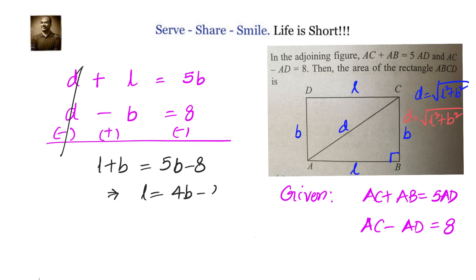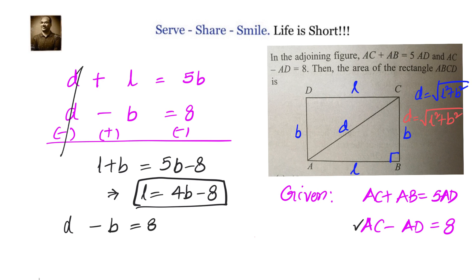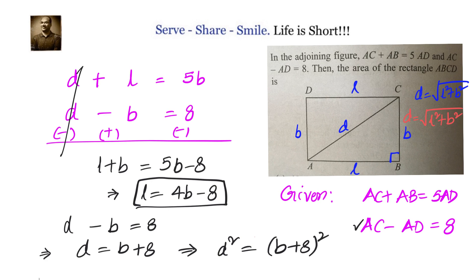We can take one of the given equations and solve for B and L. The area of the rectangle is L times B once we know those values. Taking the second equation, D minus B equals 8, so D equals B plus 8. Squaring both sides: D squared equals (B plus 8) squared. Since D squared equals L squared plus B squared, we have L squared plus B squared equals (B plus 8) squared.